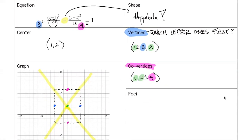In example 2, x comes first, so where the blue dots are — the vertices — those are the turning points for the branches. We sketch one branch opening to the right and one branch opening to the left.